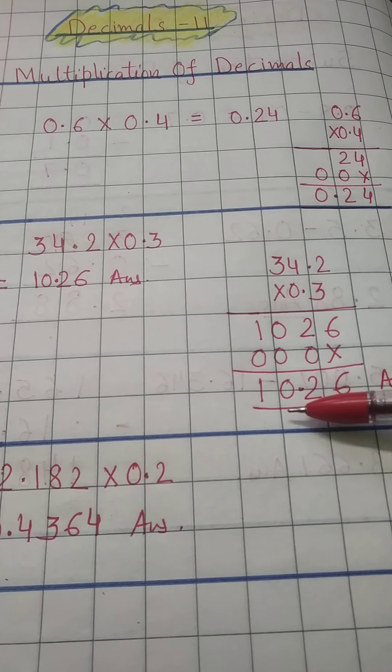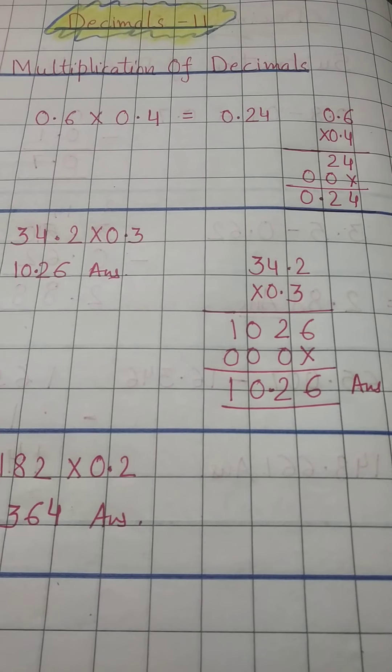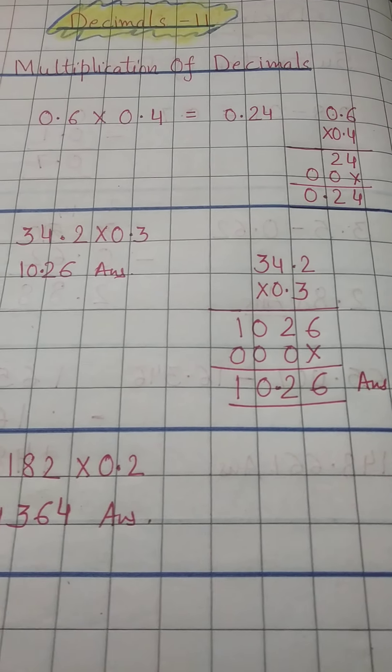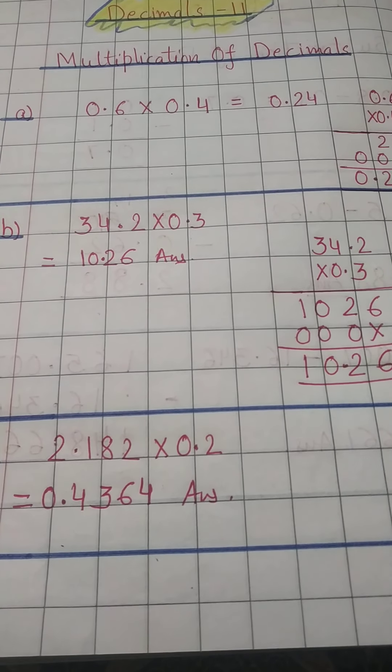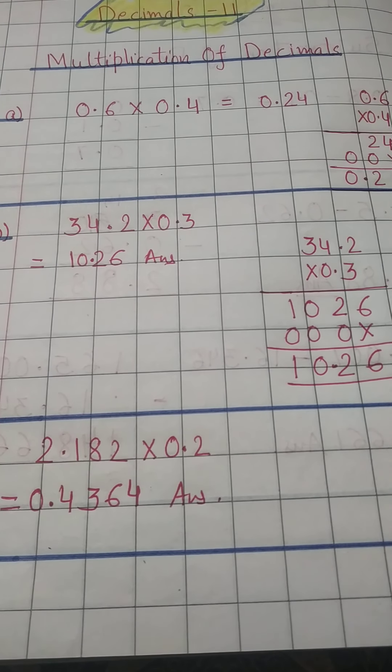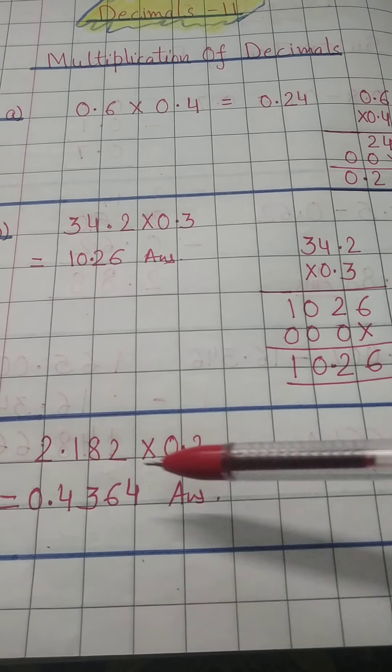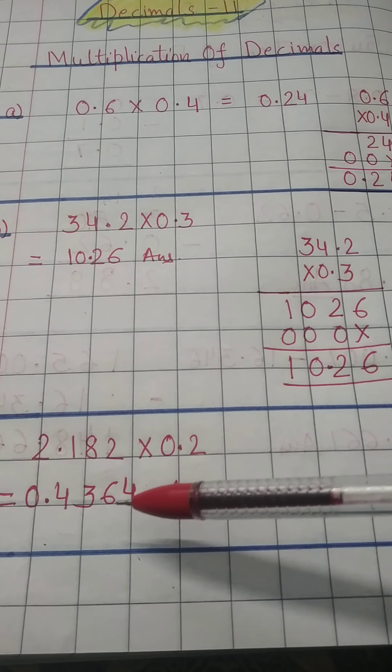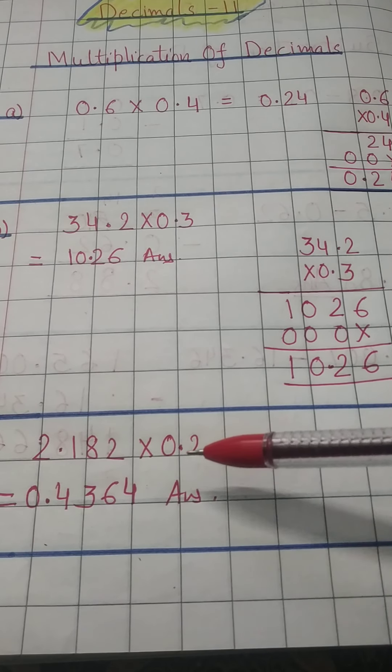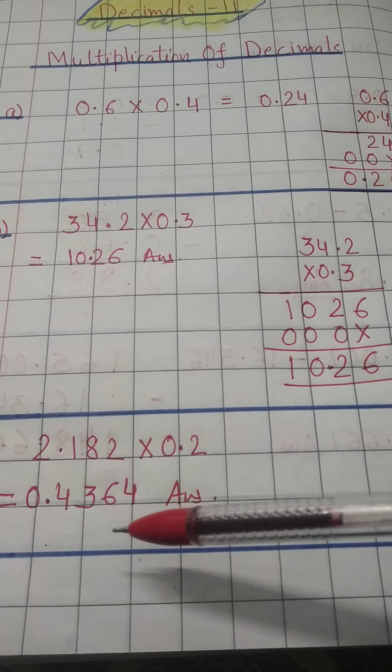After this, next question is 2.182 into 0.2. In such questions, what you will do? Only one digit is there, you can directly multiply. 2 times 2 is 4, 2 times 8 is 16, 1 carry, 2 times 1 is 2, 1 carry 3, and 2 times 2 is 4. So answer is that much.